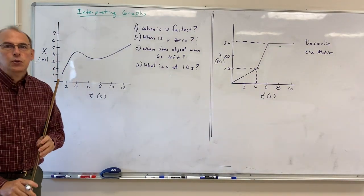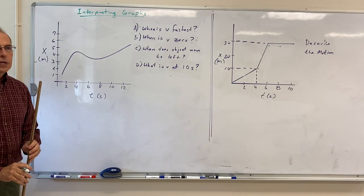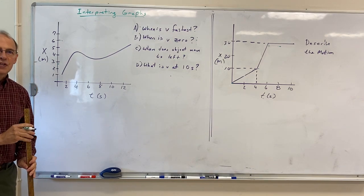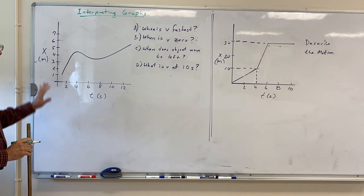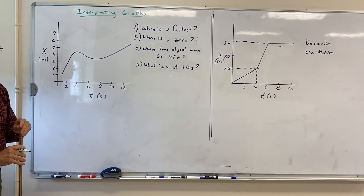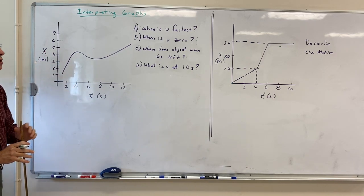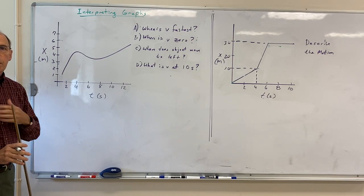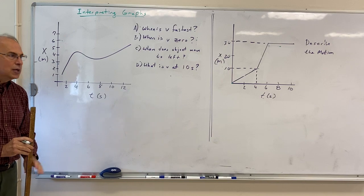I'm going to talk about interpreting graphs, particularly position versus time graphs and velocity versus time graphs. Here I have a position versus time graph, and I'm going to talk about interpreting it, asking questions about velocity. Remember, velocity is given by the slope of a position versus time graph.